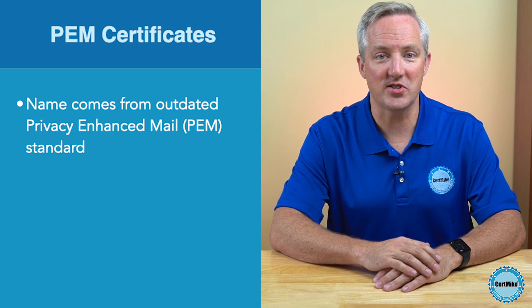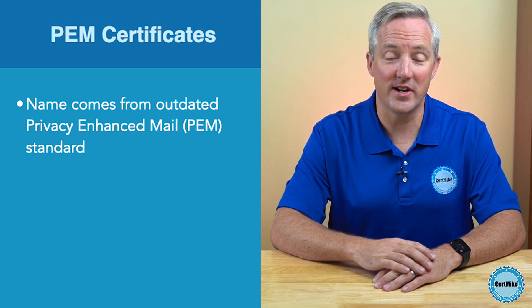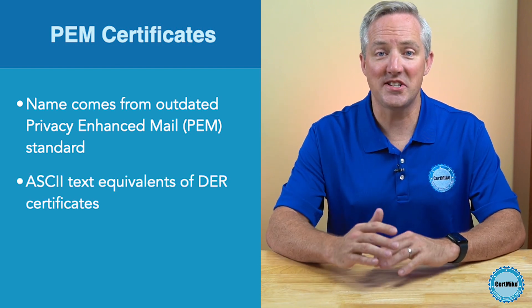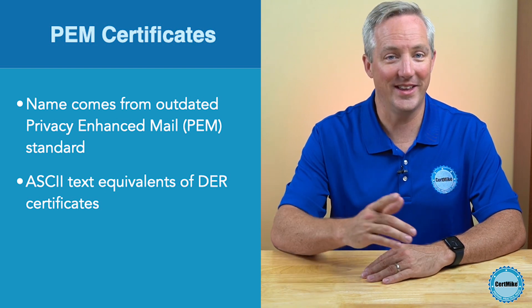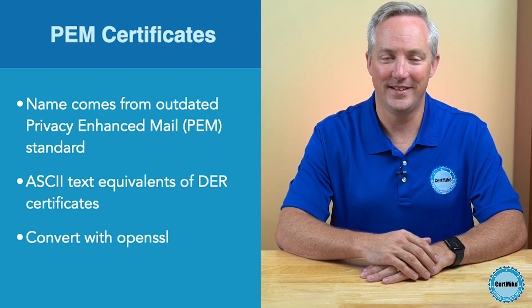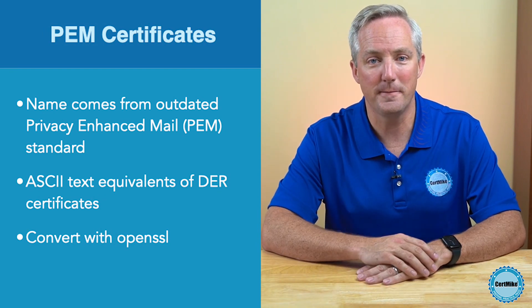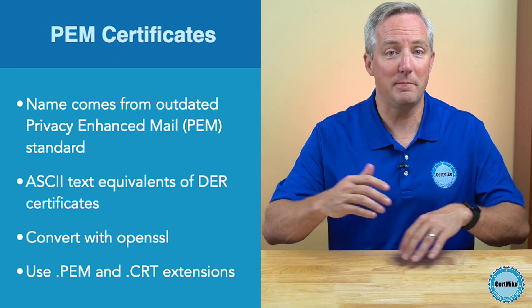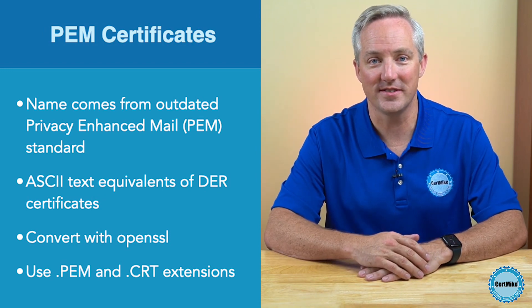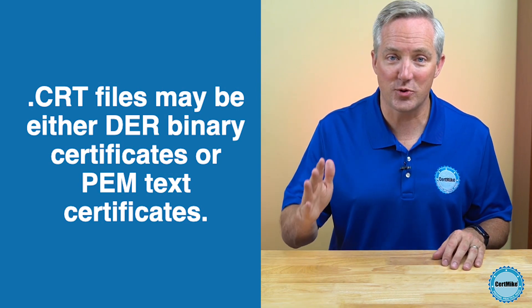The PEM certificate format is closely related to the DER format. PEM stands for Privacy Enhanced Mail, an older secure email standard that's no longer used, but we still use the certificate format from that standard today for other purposes. PEM certificates are ASCII text versions of DER certificates, which is a lot more readable than the binary version. You can easily convert between binary DER certificates and text-based PEM certificates using tools like OpenSSL. PEM certificates are normally stored in files with the .pem or .crt file extensions. Note that the .crt file extension is used for both binary DER files and text PEM files — you can't tell whether a .crt certificate is binary or text without actually looking at the contents of the file.